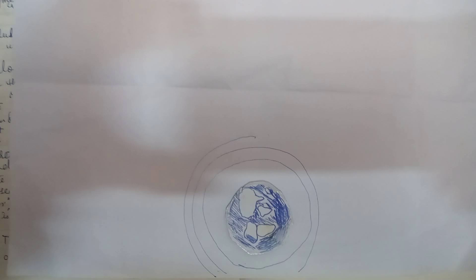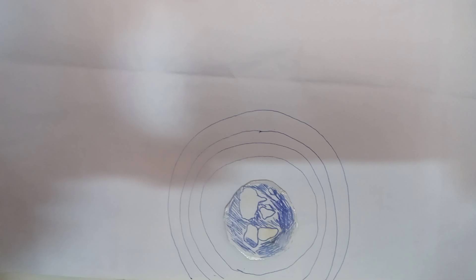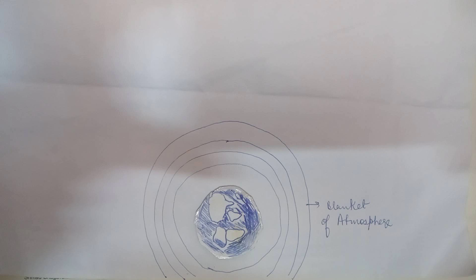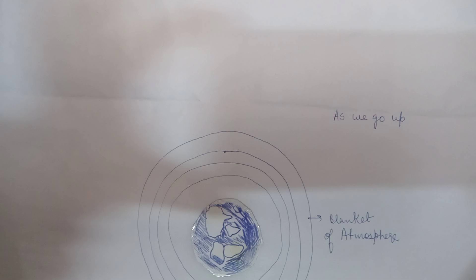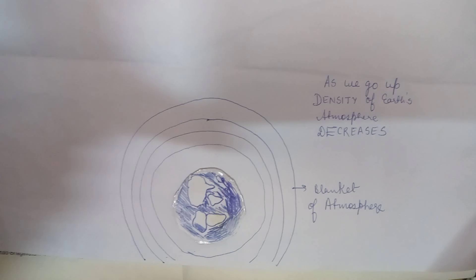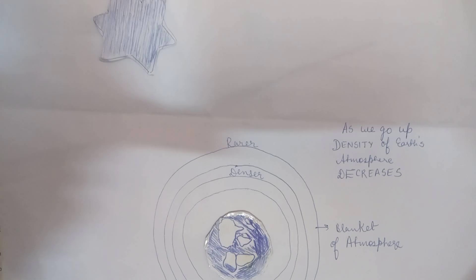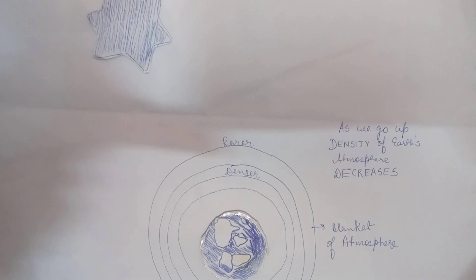The stars we see in the night sky are not at their actual position. Our Earth is surrounded by layers of atmosphere. As we go up in the atmosphere, the density of layers decreases, so the lower layers are denser and upper layers are rarer.